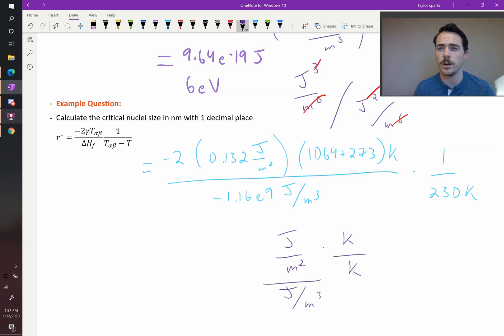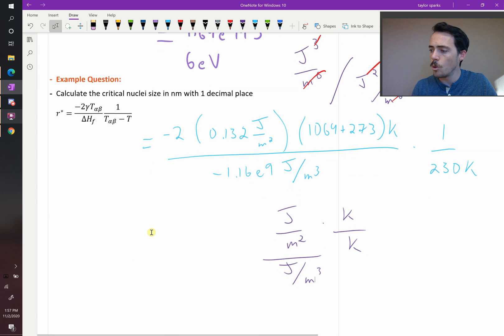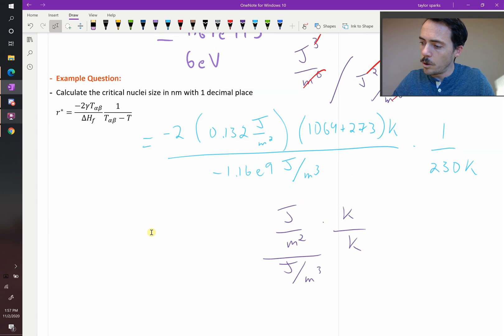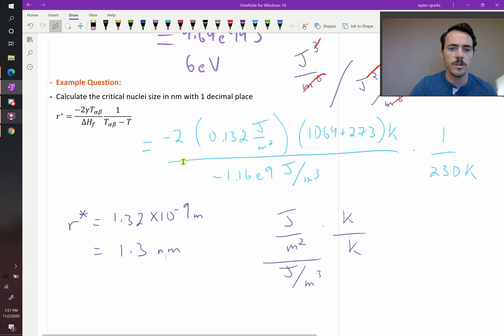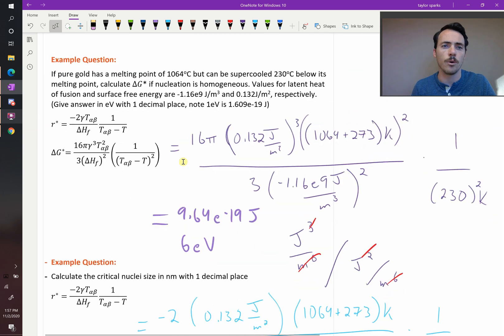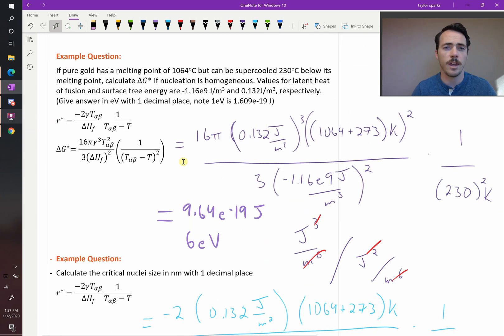We're going to have to multiply that by 1 times 10 to the 9th to put it into nanometers. When I plug this in, I get the value as 1.32 times 10 to the negative 9 meters. R star is equal to 1.32 times 10 to the negative 9 meters, or that's 1.32 nanometers. All right, so that's how you go about doing these sorts of calculations for the activation energy for homogeneous nucleation and the critical size for homogeneous nucleation in metals.